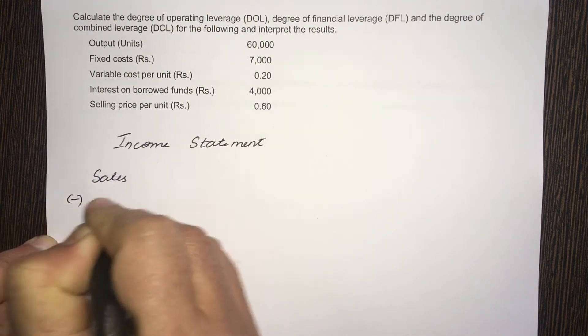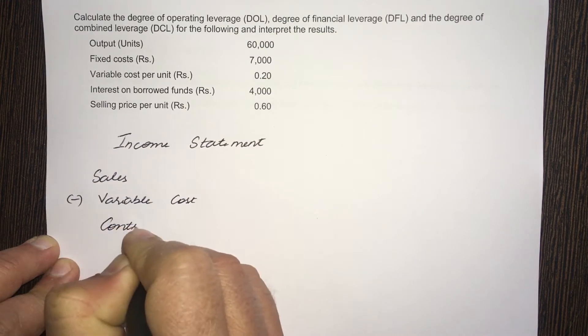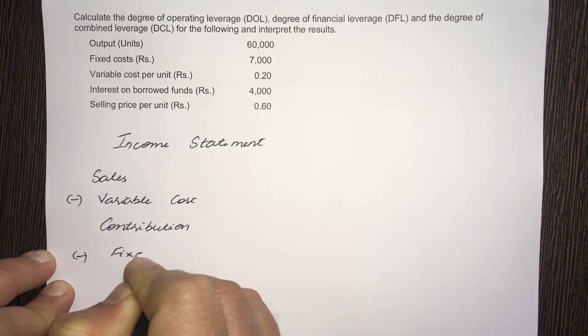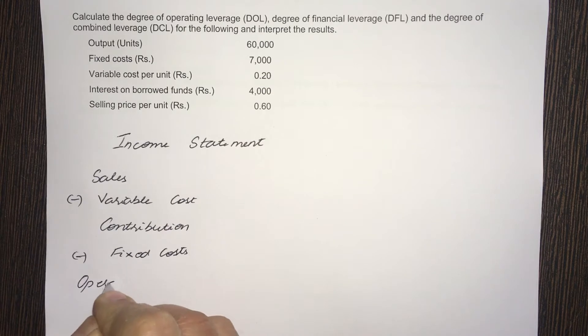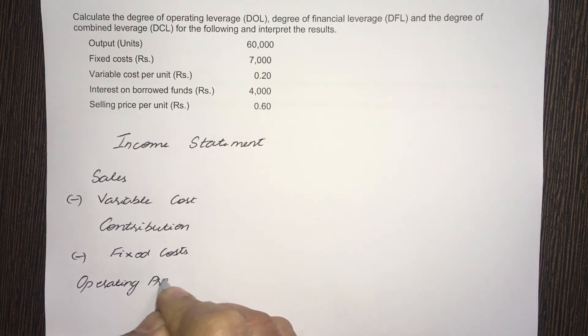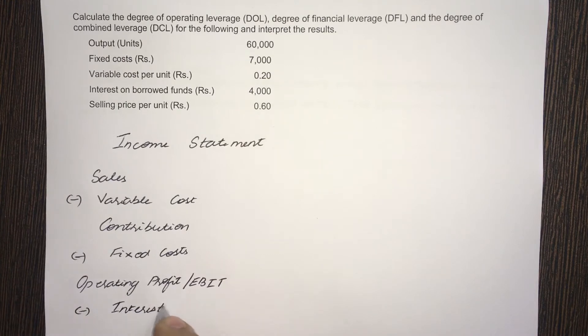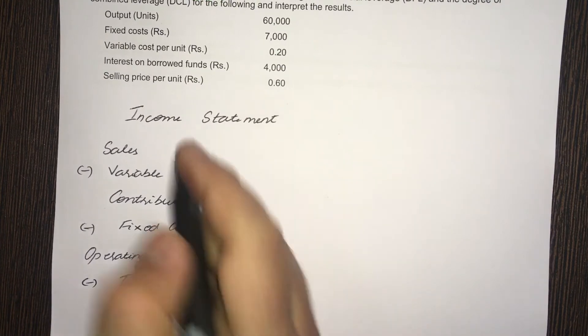Sales minus variable cost equal to contribution. Contribution minus fixed cost equals operating profit, also known as EBIT (earnings before interest and taxes), less interest payment, interest on debenture or interest on debt. And finally, you have EBT, which is earnings before taxes.